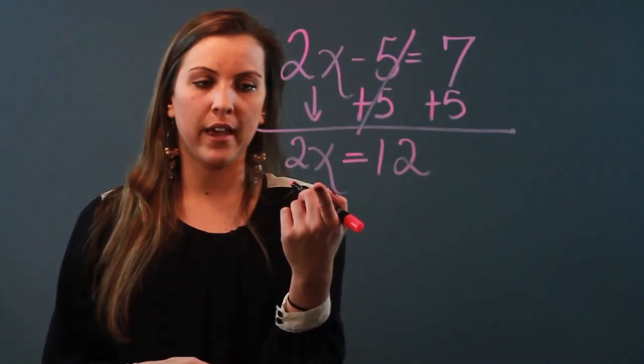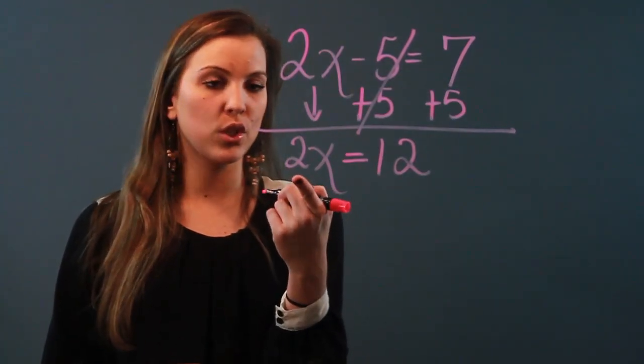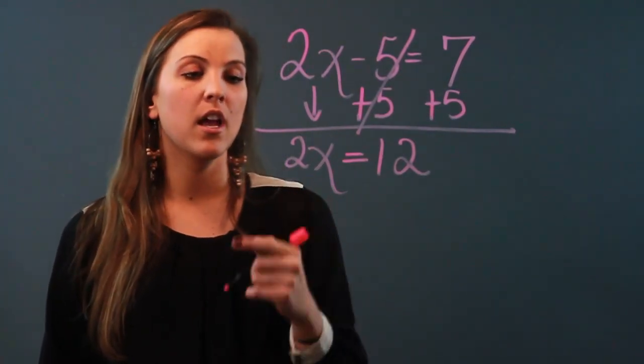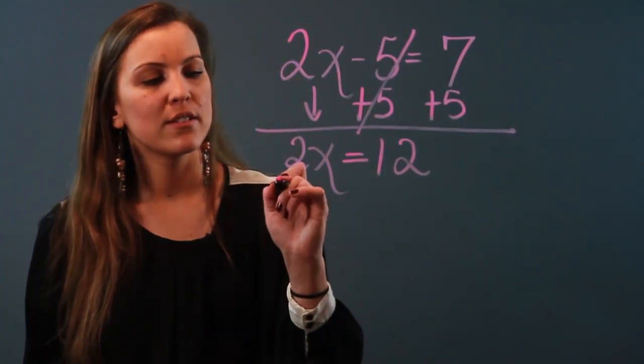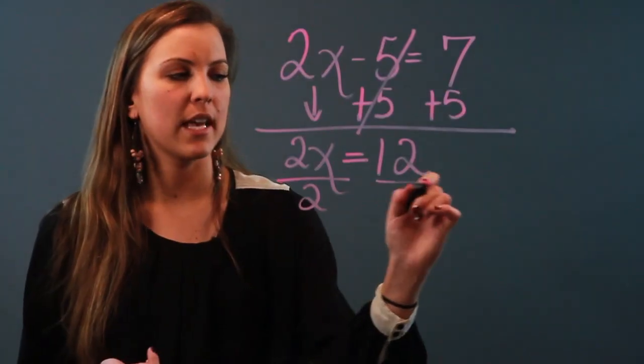I haven't isolated the variable yet. I've got one more thing left by it: I've got that 2, which is being multiplied by the x. So the inverse operation of multiplying by 2 is dividing by 2. So if I divide both sides by 2,